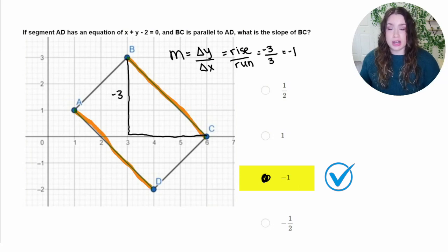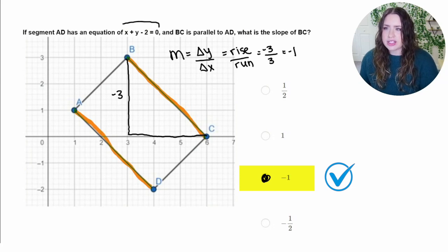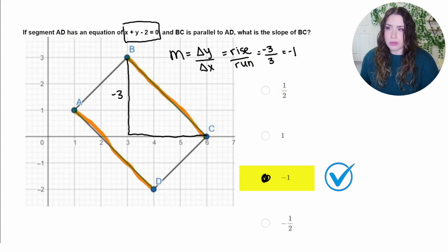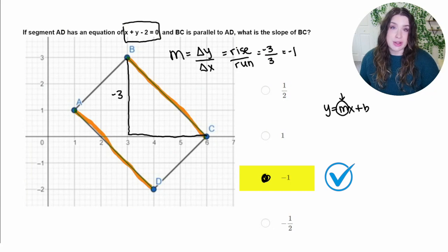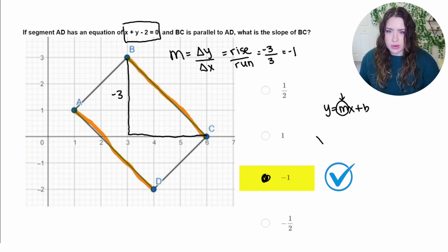But as I promised, I want to show you a second way that we can do this in case you aren't given a graph and can't count it. So we also are given this equation up here, which we could solve to find the slope. And what we want to do is we want to get it into slope intercept form, which is y equals mx plus b, because m right here is going to be our slope. So let's go ahead and take our given equation, x plus y minus 2 equals 0.